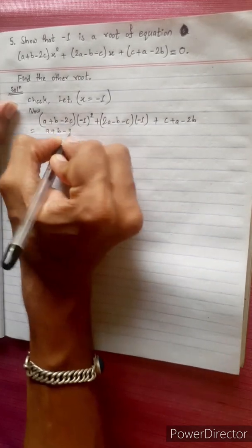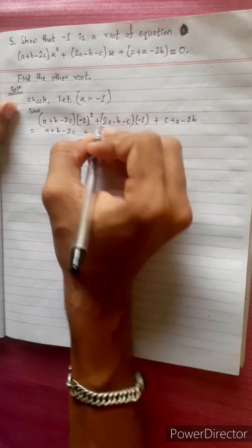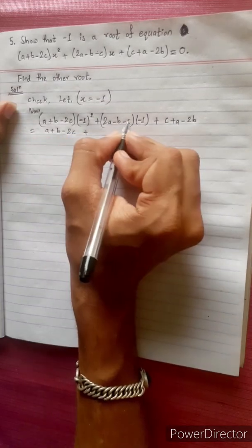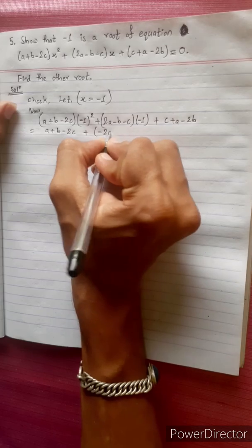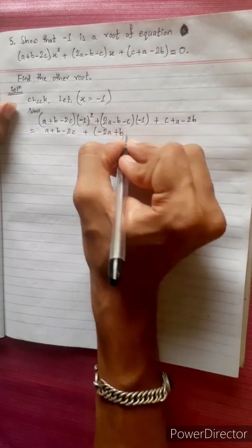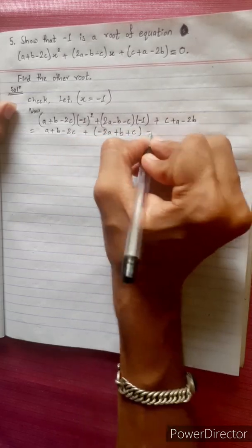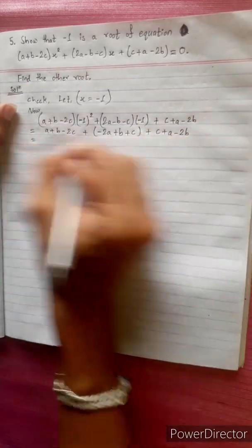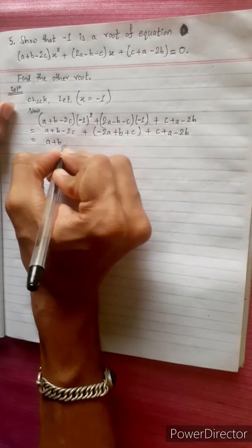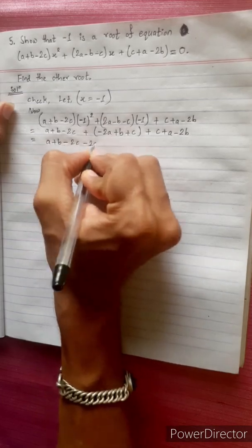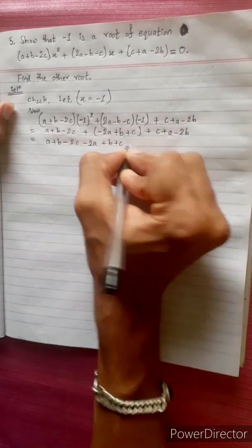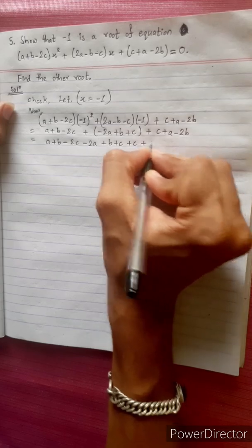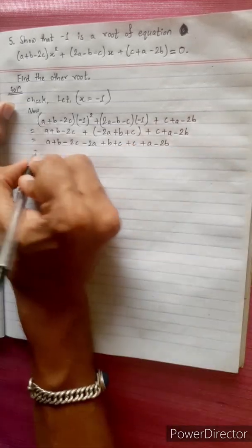Yoy lai tiki shodhiyin ghe. A plus b minus 2c into 1. Plus. Yoy minus li sabla multi daga war wane. Sab minus mincha. Minus 2a minus minus plus b minus minus plus c. Plus c plus a minus 2b. Equal to. Sablai holding bracket abo. A plus b minus 2c minus 2a plus b plus c plus c. Plus a minus 2b. Equals to.